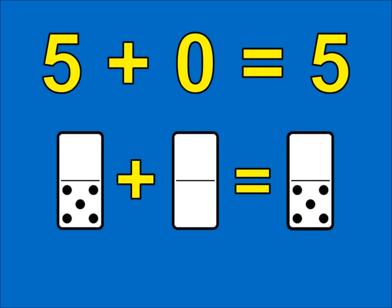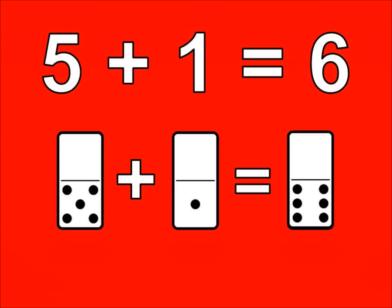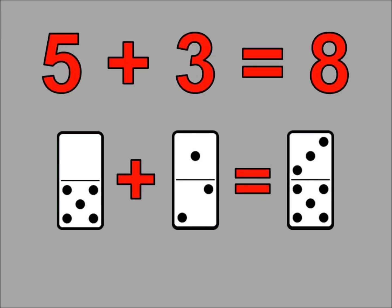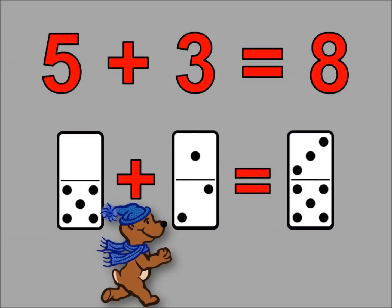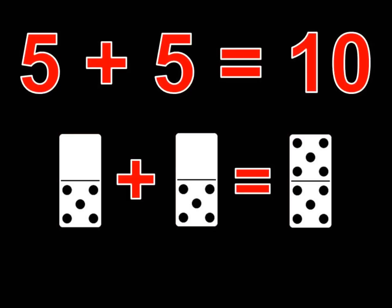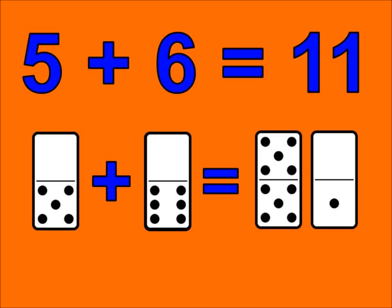5 plus 0 is 5. 5 plus 1 is 6. 5 plus 2 is 7. 5 plus 3 is 8. 5 plus 4 is 9. 5 plus 5 is 10. 5 plus 6 is 11.